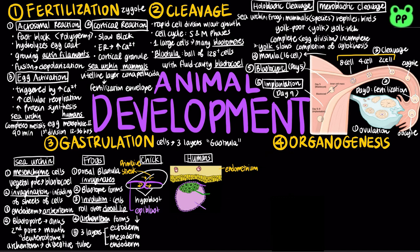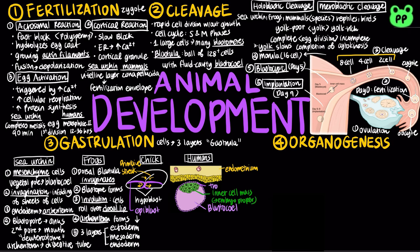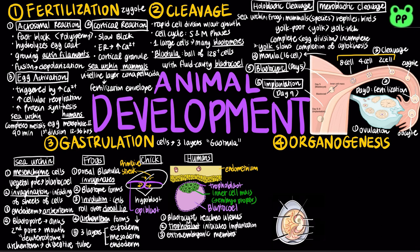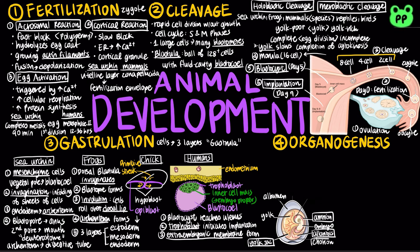In human development, at the completion of cleavage, the blastocyst forms. It contains the blastocoel, a group of cells called the inner cell mass which will later develop into the embryo, and the trophoblast, the outer epithelium of the blastocyst. When the blastocyst reaches the uterus, the trophoblast initiates implantation 7 days after fertilization. Extraembryonic membranes start to form 10 to 11 days after implantation, including the yolk sac that encloses yolk, the amnion that encloses amniotic fluid, the allantois that disposes of nitrogenous waste and contributes to gas exchange, and the chorion, the outermost membrane that functions in gas exchange.